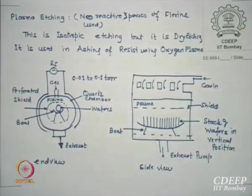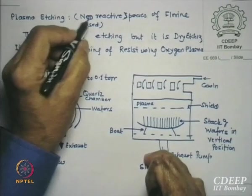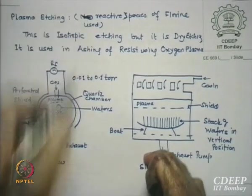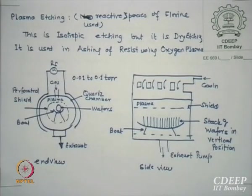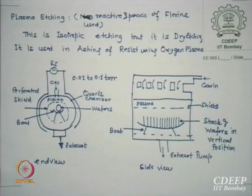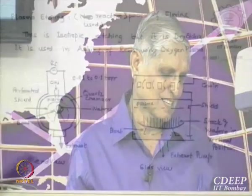Please note: a reactive species of fluorine — or any other reactive species — is used in RIE. Now ashing is an isotropic etching. Why is it called isotropic? Because it is not directional — it can etch in any direction. I want to remove resist from everywhere anyway. It is used in ashing of resist using oxygen plasma.